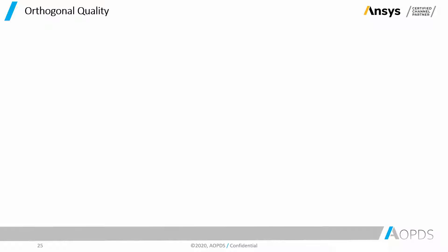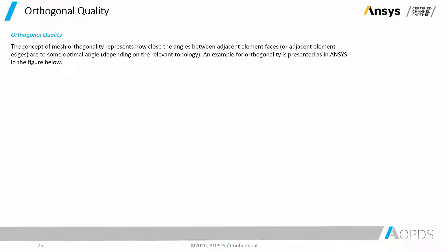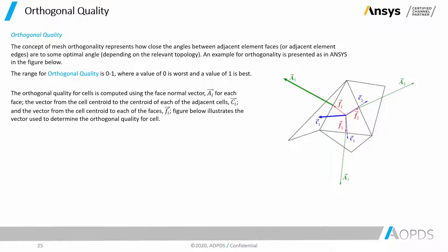First, let's see what the definition of orthogonal quality is. The concept of mesh orthogonality represents how close the angles between adjacent element faces or adjacent element edges are to some optimal angle, depending on the relevant topology. An example for orthogonality is presented in ANSYS in the figure below. The range for orthogonal quality is 0 to 1, where a value of 0 is worst and a value of 1 is the best.